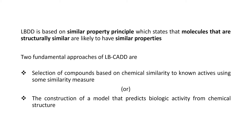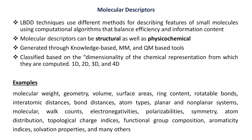Two fundamental approaches of ligand-based drug discovery are: first, selection of compounds based on chemical similarity of known actives using some similarity measure; and second, construction of a model that can predict the binding activity of unknown molecules from their chemical structure. Ligand-based drug design methods use different computational algorithms that balance efficiency and information content for describing features of small molecules. Molecular descriptors or features can be structural as well as physicochemical, generated using knowledge-based molecular mechanics or quantum mechanic based methods. They can be classified by dimensionality as one-dimensional, two-dimensional, and three-dimensional.